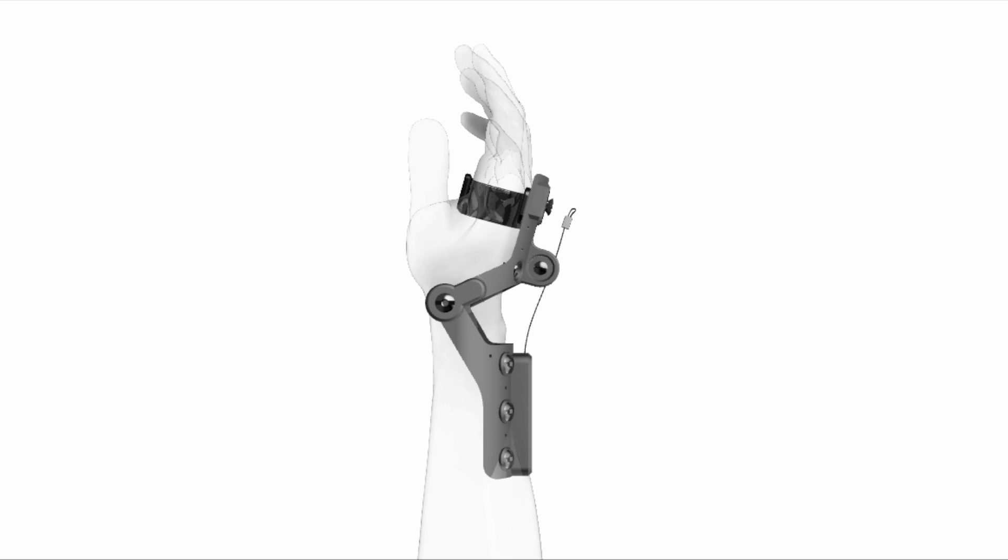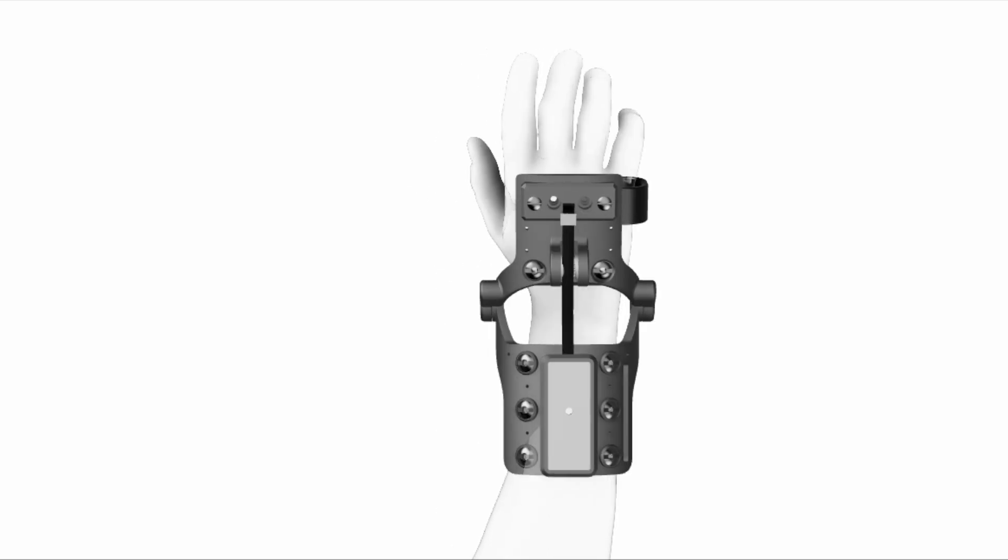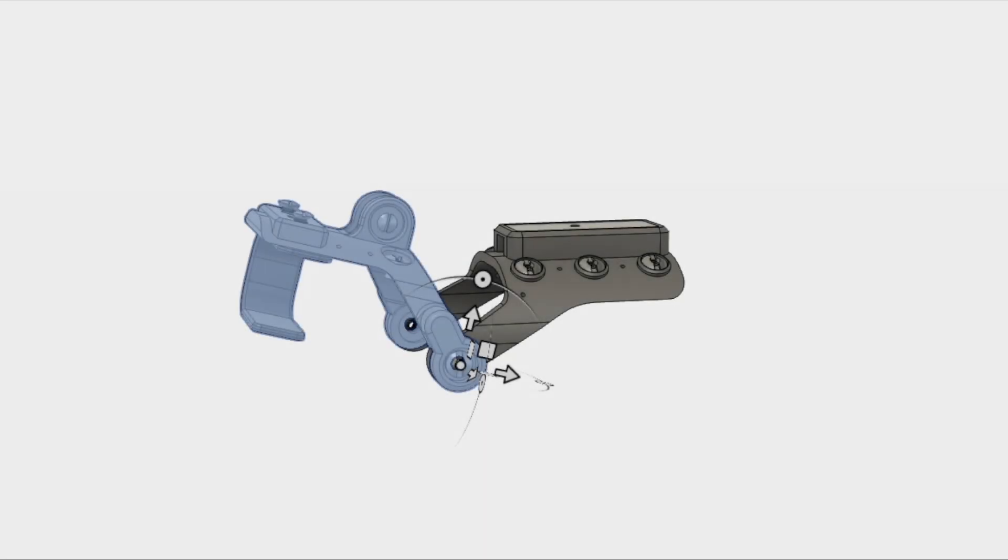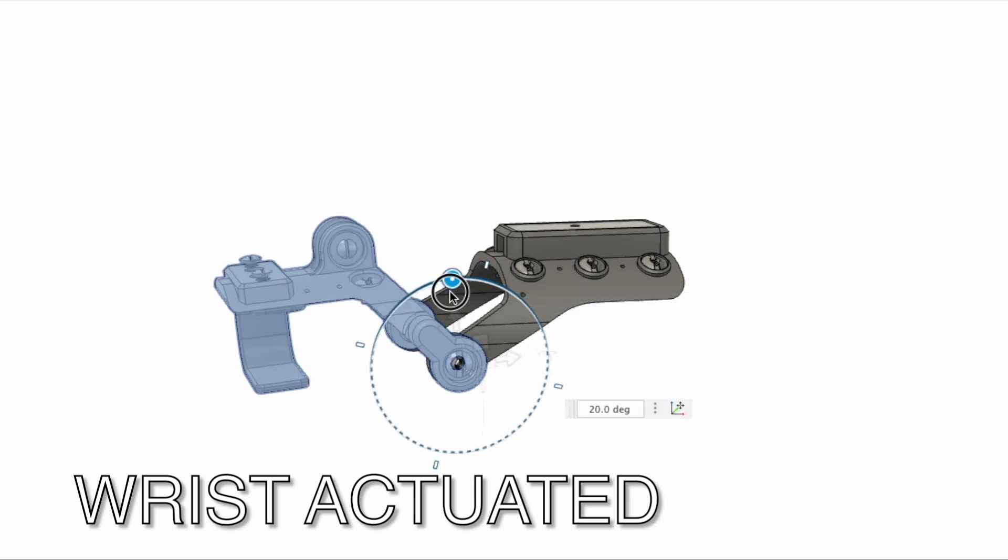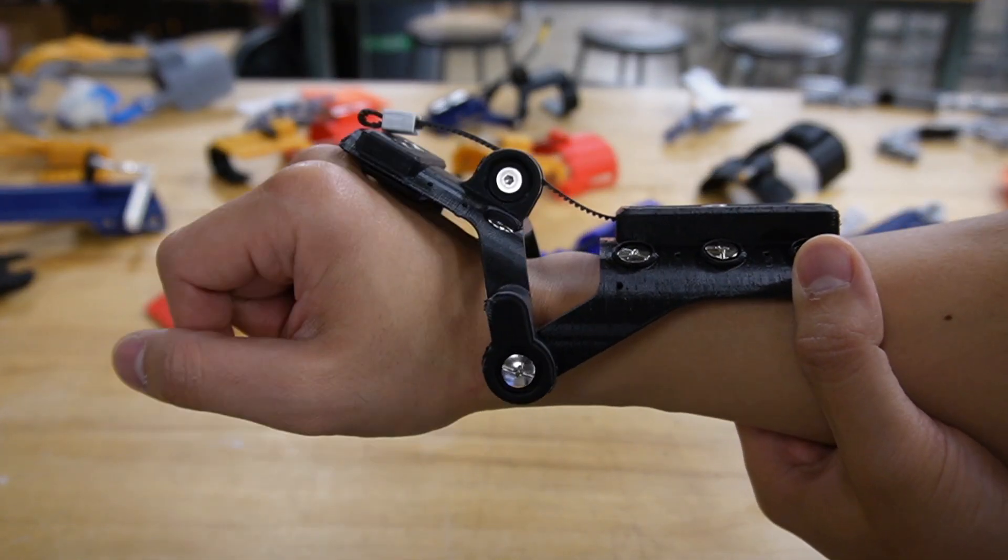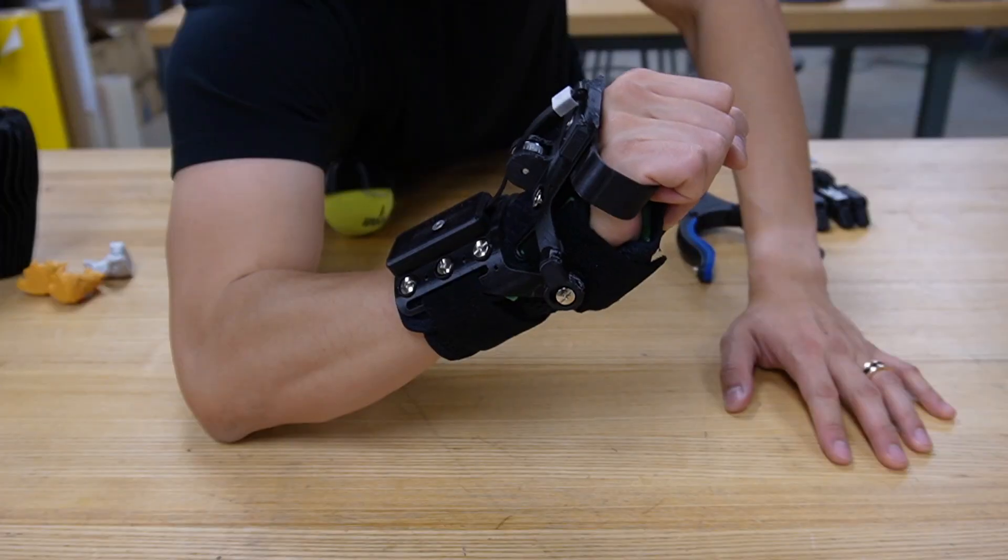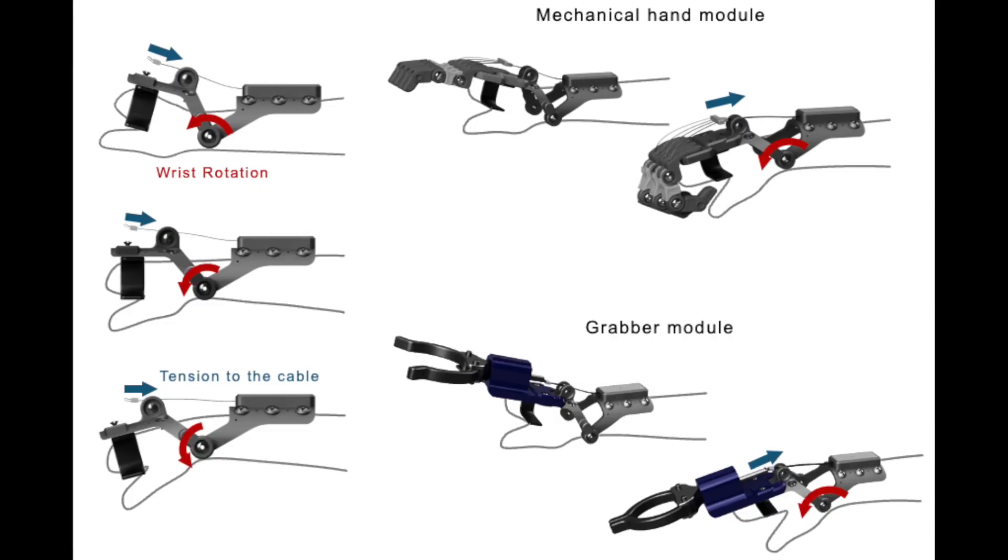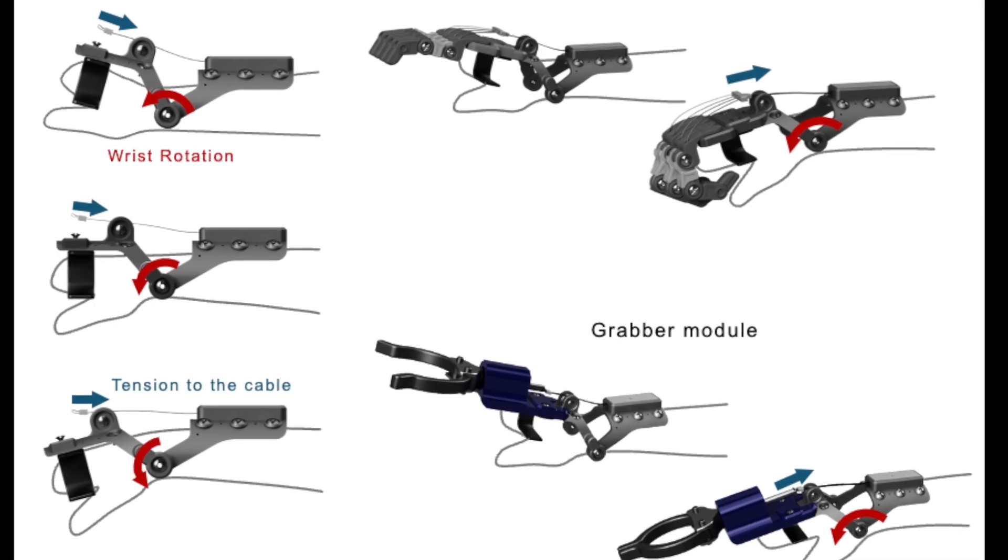Second is wrist actuated mechanism. A slight, about 20 degrees rotation of the wrist activates a pulley mechanism creating translational motion that operates various end effectors through the belt system.